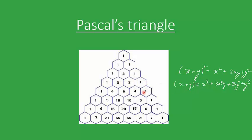Similarly, if you work out higher powers of x plus y to the power n — where n is 4, then 5, then 6, then 7 — the coefficients of the respective terms, that is the numerical values multiplied to the terms, will remain as given in Pascal's Triangle.